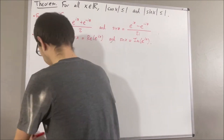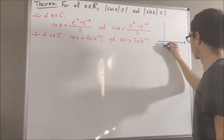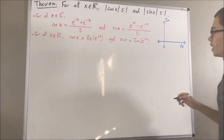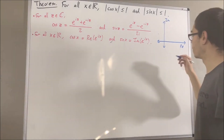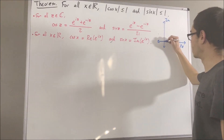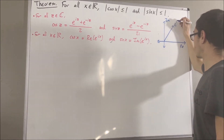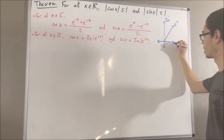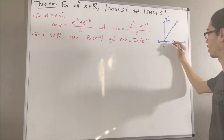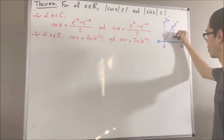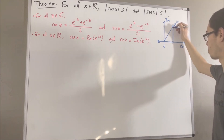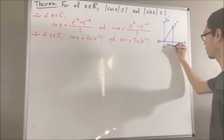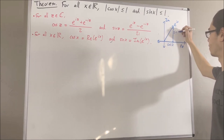So, geometrically, if we consider the complex plane, then maybe e to the ix is this vector. The real part of e to the ix is represented like this, and the imaginary part of e to the ix is represented like this. So we have cosine of x and sine of x.